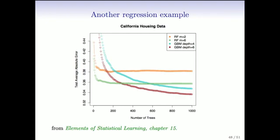Here are a couple more examples from our earlier data mining book. This is the California housing data, looking at housing prices. We have the test error as a function of number of trees for several methods. Random forest with M equals two gives an error of about 0.39. Random forest with more predictors per split improves things a bit. GBM — the gradient boosting machine R package — with depth four and eight trees is doing somewhat better, and it looks like the curves are still on their way down, so maybe in this example one should have run even more trees.